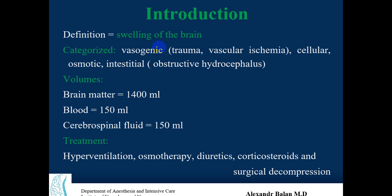Vasogenic edema can be divided into sub-compartments like trauma, vascular ischemia, and interstitial. Obstructive hydrocephalus is also a recognized category. As you can see, these reflect the volumes and components of the brain.